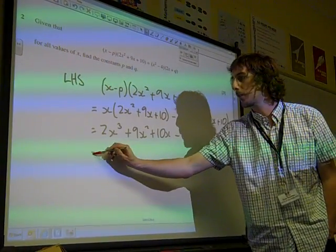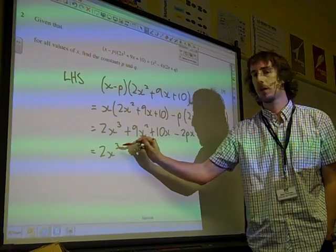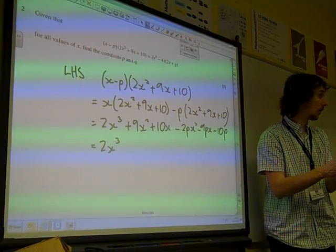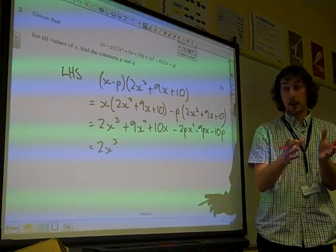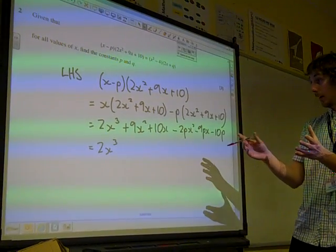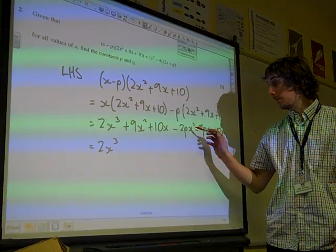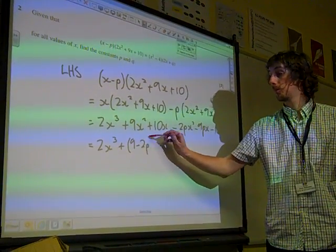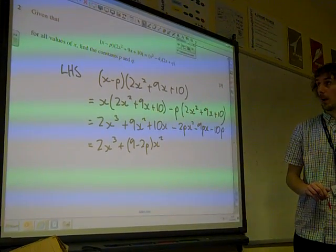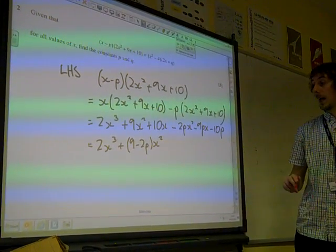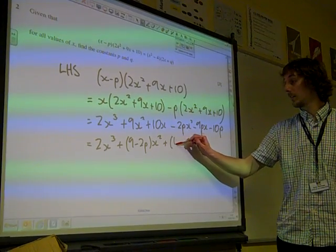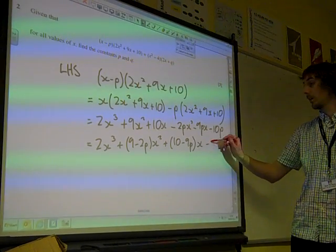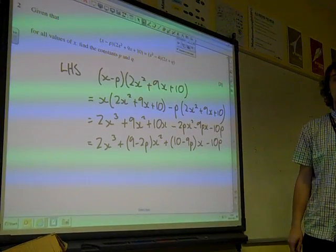So all together we've got 2x cubed. Now remember when we're dealing with algebra we want to collect together like terms. So we're going to collect together the x squared terms. We've got 9x squareds, take away 2px squareds. So we've got 9 minus 2px squared. And the x's we've got 10 minus 9px. And then we've got negative 10p at the end.